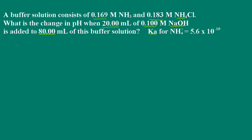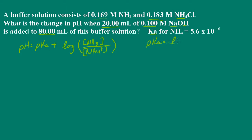First thing we need to do is determine the pH of the buffer before any hydroxide ion is added. We can do that using the Henderson-Hasselbalch equation: pH = pKa plus the log of the concentration of the base divided by the concentration of the weak acid. So first we need to determine our pKa. The pKa is the negative log of 5.6 times 10 to the negative 10, and that gives us 9.25.